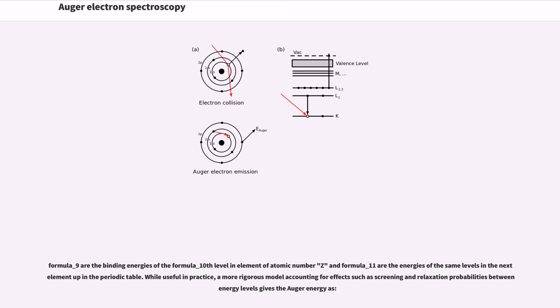E_A(Z), E_B(Z), and E_C(Z+1) are the binding energies of the A, B, C levels in element of atomic number Z, where E_C is taken from the next element up in the periodic table. While useful in practice, a more rigorous model accounting for effects such as screening and relaxation probabilities between energy levels gives the Auger energy as